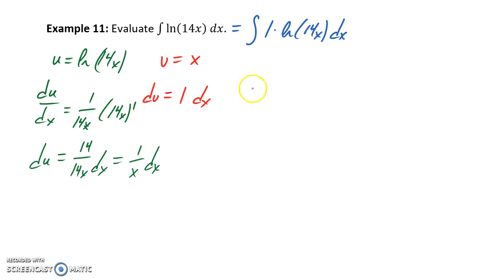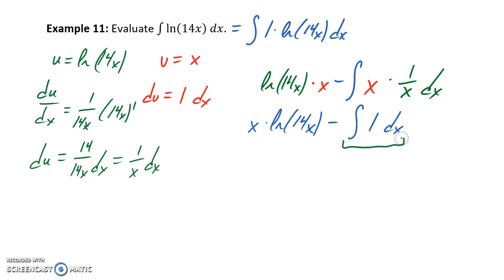So this means we could set up our integration by parts problem as the natural log of 14x times x, minus the integral of our statement for v, so again that's x, and then du, which is 1 over x dx. So we would get x times the natural log of 14x, if we just reorder those first two pieces, minus the integral of x over x would just be 1. So if we just focus on taking the integral of 1 dx, that would give us x plus some constant c.